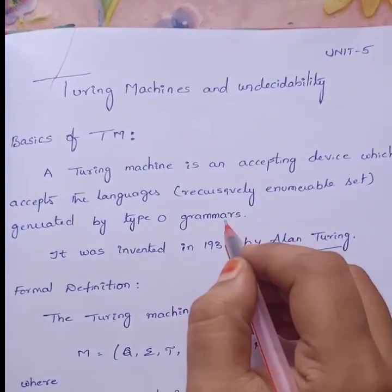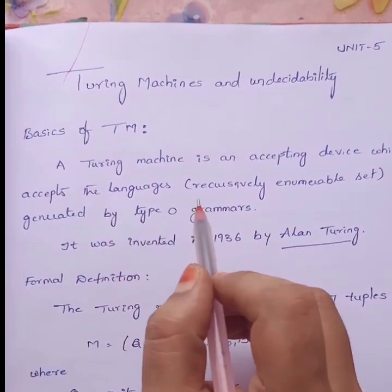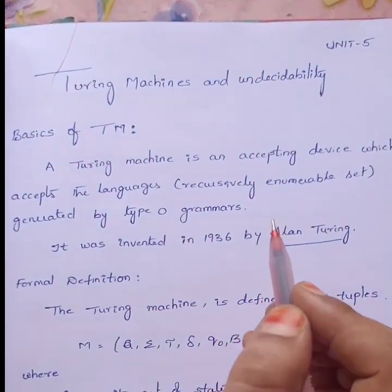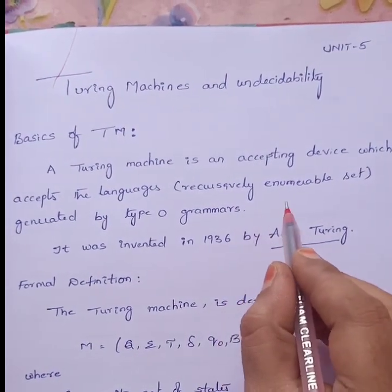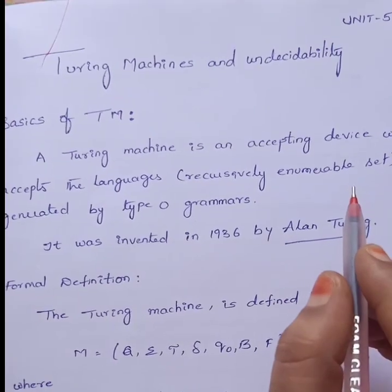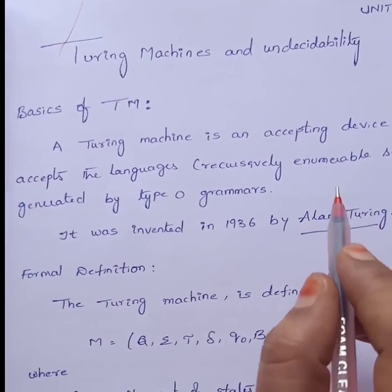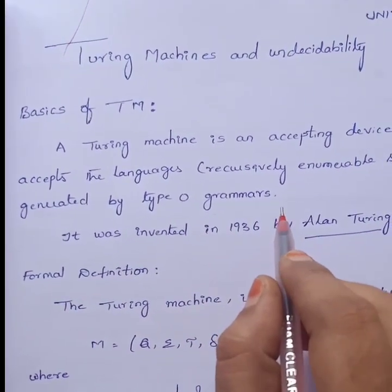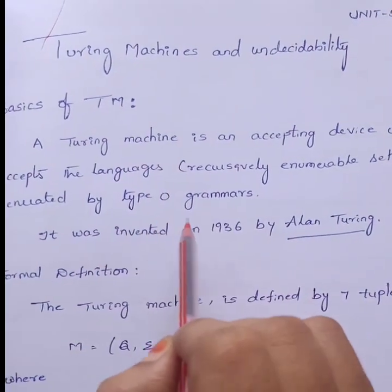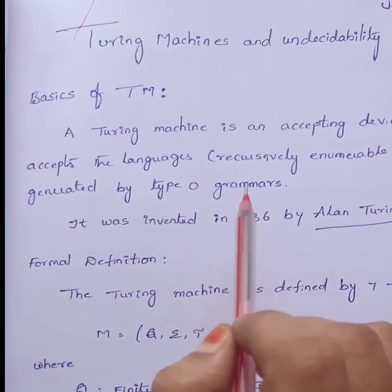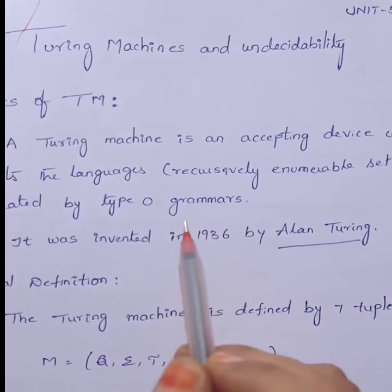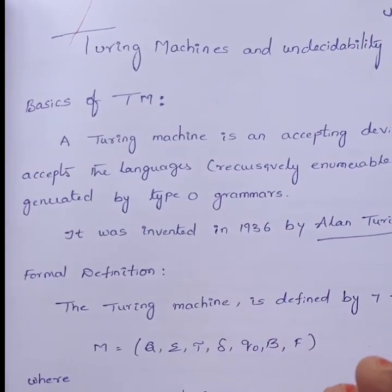A Turing Machine is an accepting device which accepts the language — recursively enumerable set or recursively enumerable language — generated by a type 0 grammar. How the production rules are structured in a type 0 grammar was already discussed. We know Alan Turing is the inventor of the Turing Machine, in 1936.